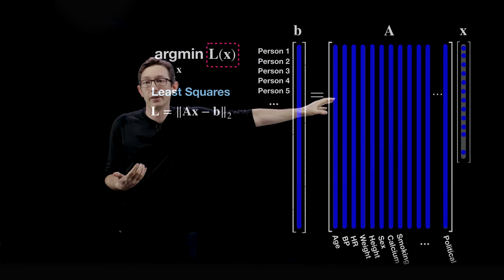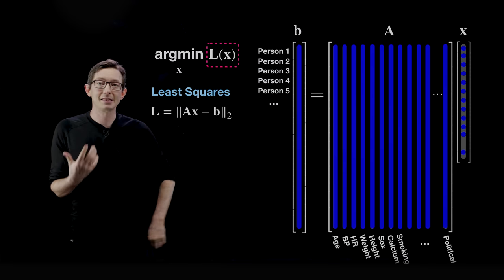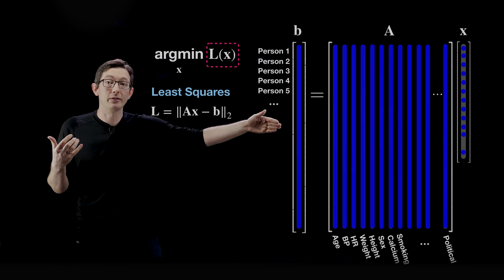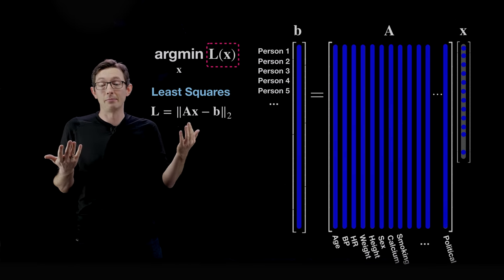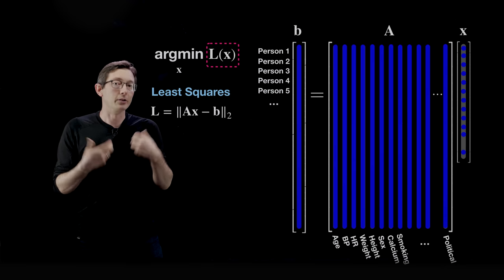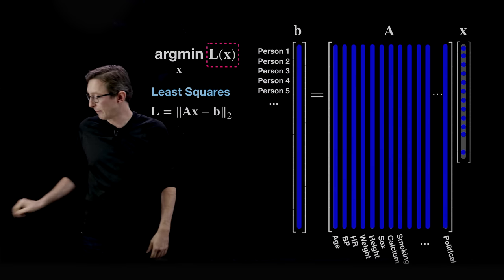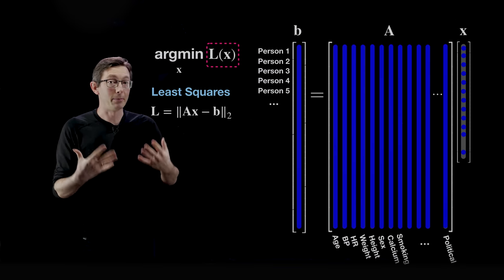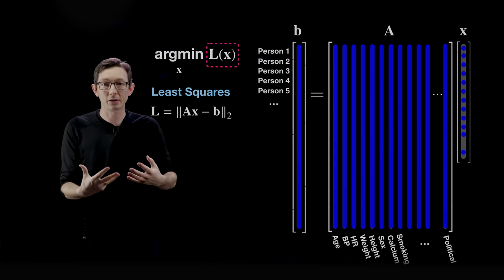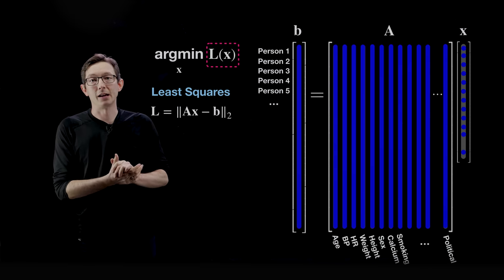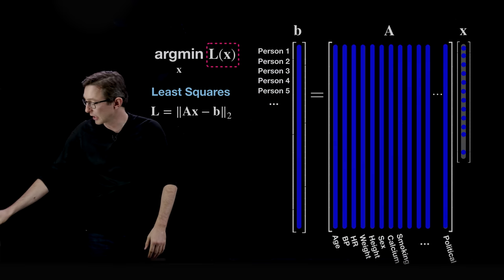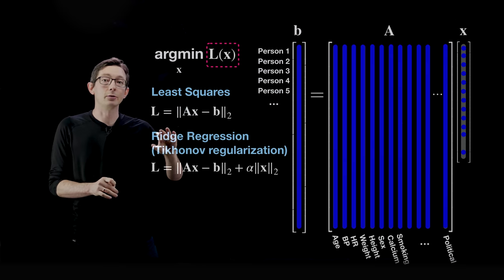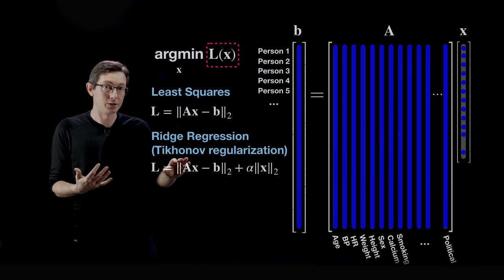It's also really hard to interpret the model you get from least squares because it says all of those factors are important. Maybe you have hundreds or even thousands of factors — columns of A — that you're measuring. You don't necessarily want all of those factors present in your model. So there are things you can do to modify this regression to give it better properties and make it more physical and more interpretable.